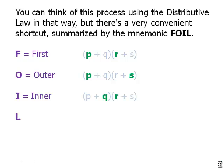Then I, those are the inner ones. The last in the first parenthesis and the first in the last parenthesis, q and r. And then finally, we look at the two last terms. The last in the first parenthesis and the last in the last. So those are the four pairs we're going to look at, summarized by first, outer, inner, last.